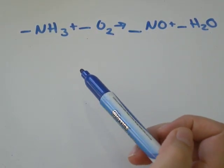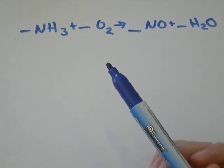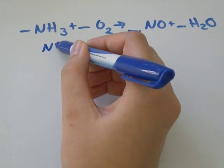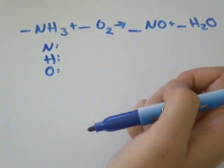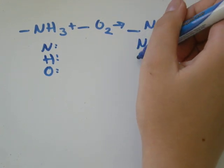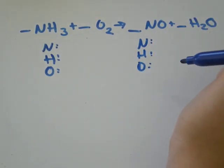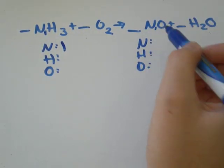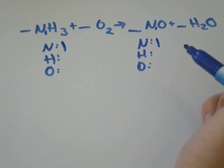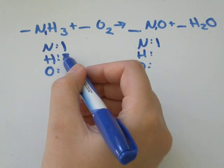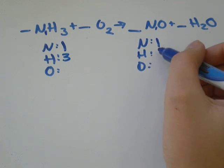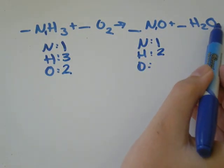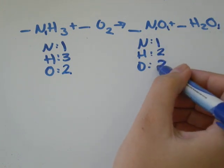In this case, I will just do a little count first of what I've got so that I know what I have on each side. I've got nitrogen, hydrogen, and oxygen on both sides. So I have one nitrogen atom over here and one nitrogen atom over here. I have one, two, three hydrogen atoms, and over here I have two. I have two oxygen atoms, and here I have one here and one here. So I also have two.